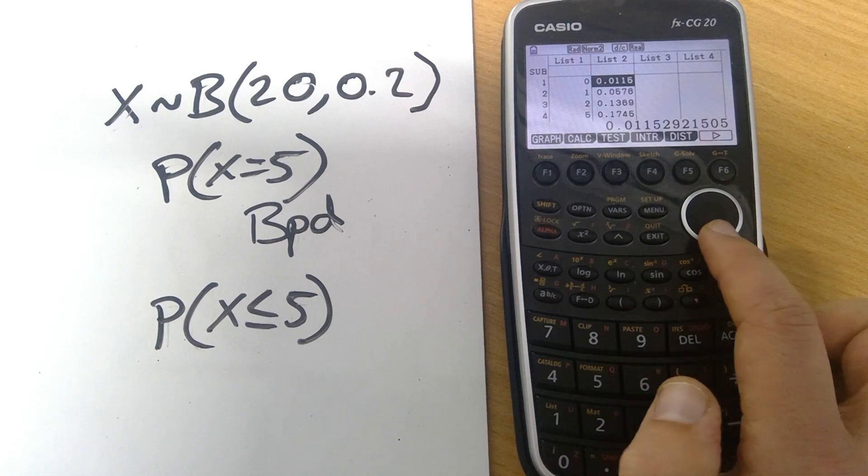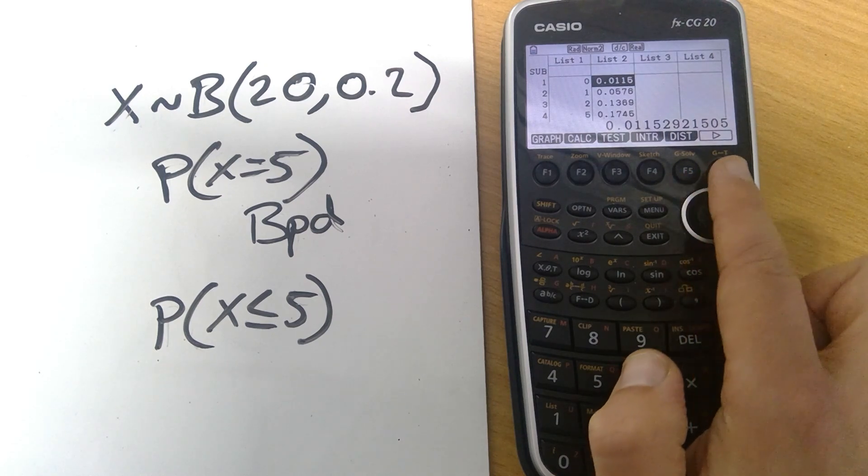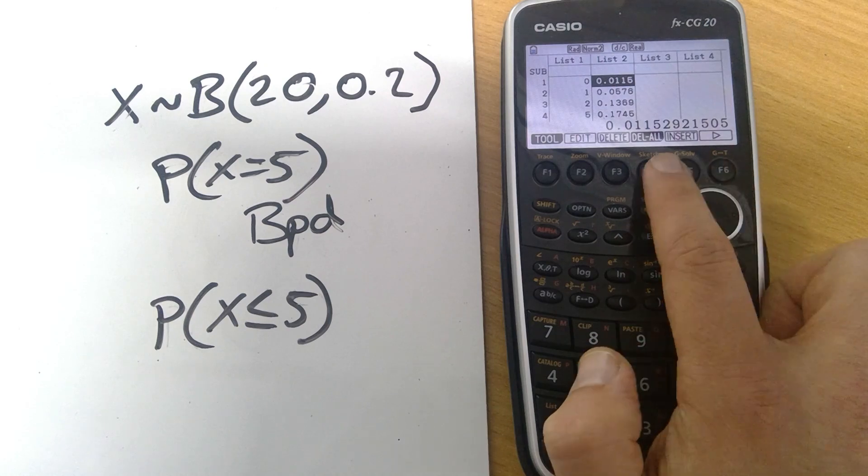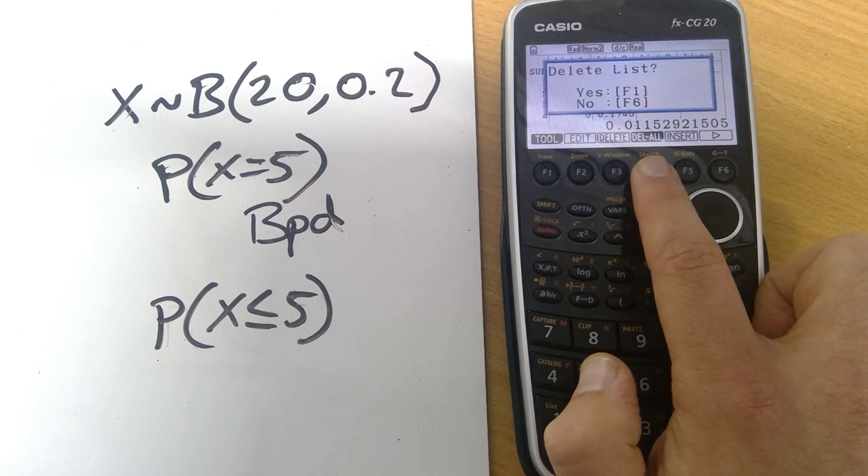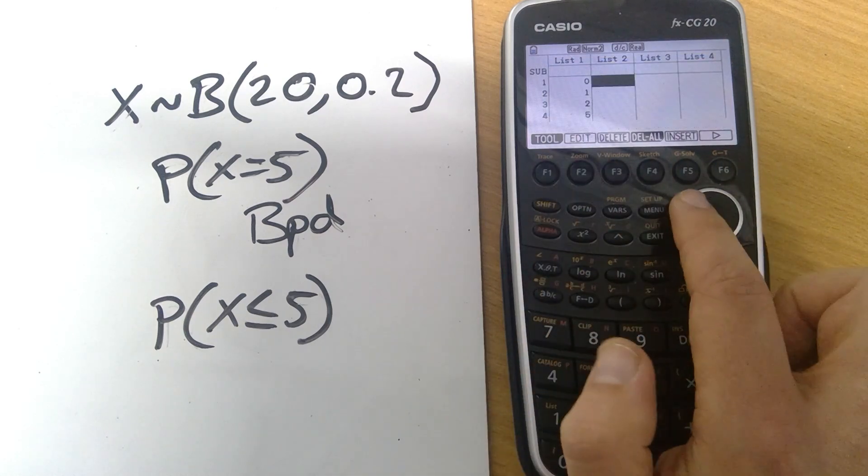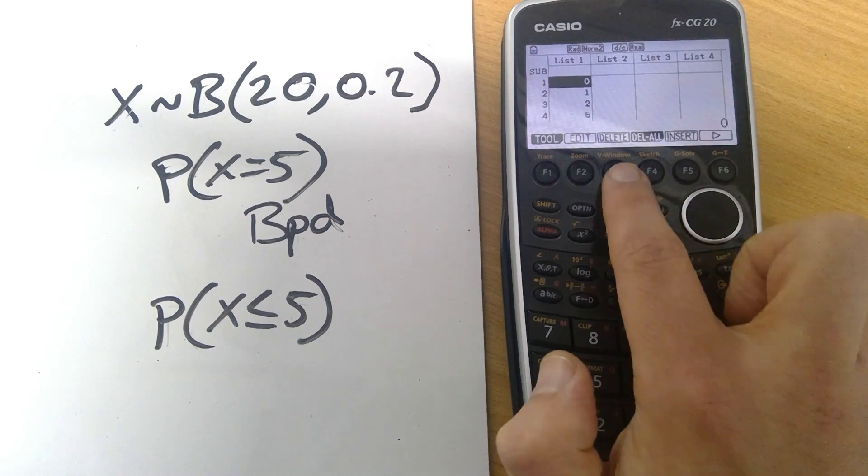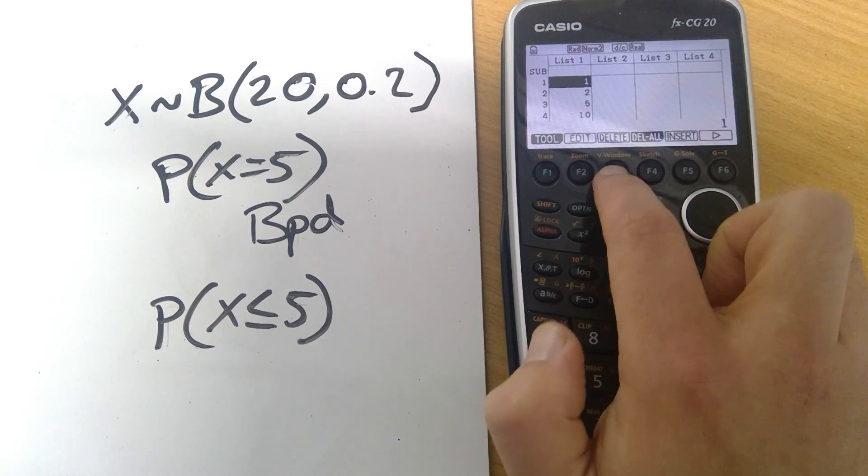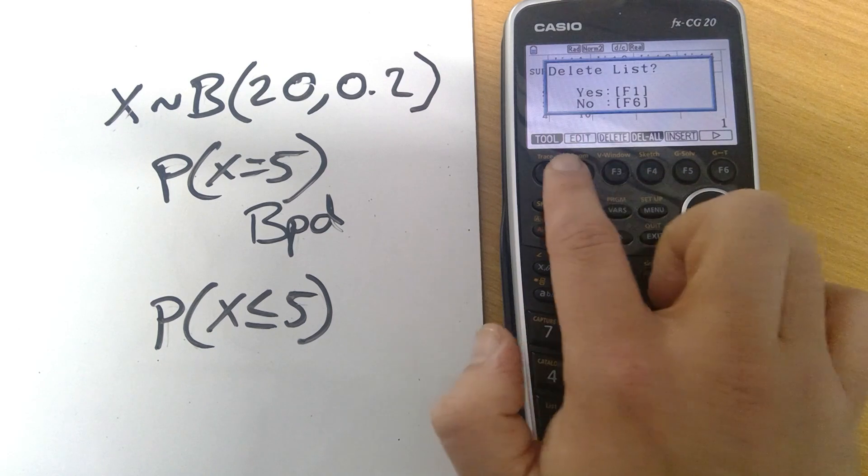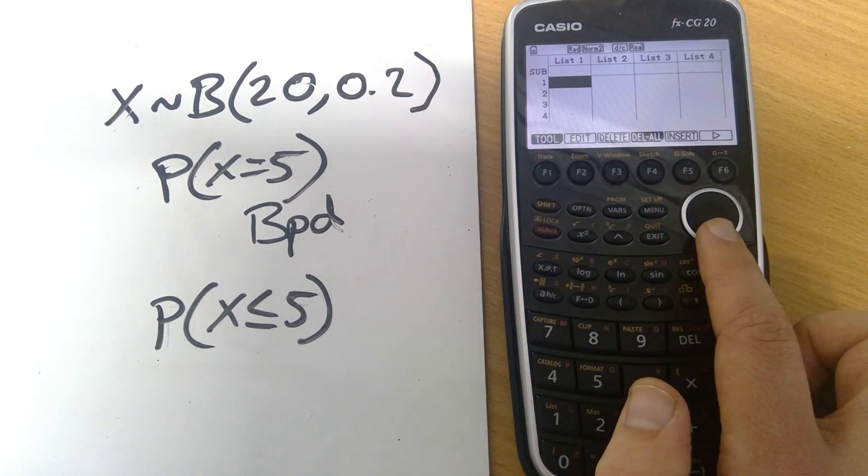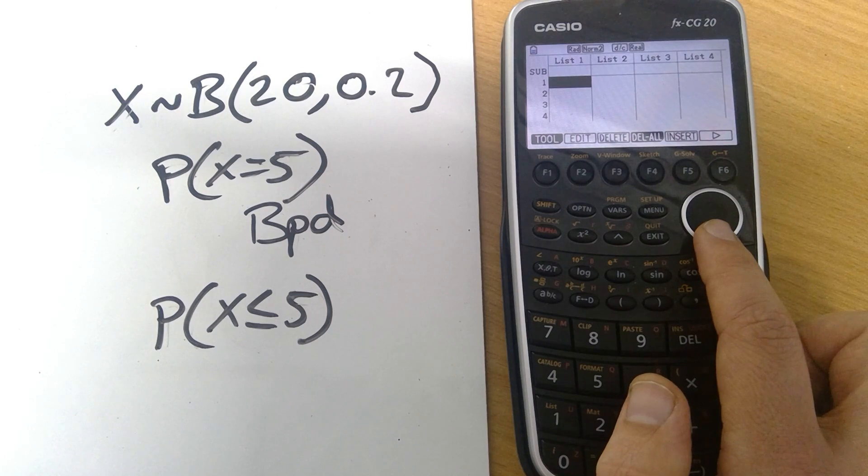We're going to do some more work in a moment. I'm going to want to clear these values out so if I want to do that simply go to the next set of menus pressing delete all will delete that whole column. Or if I wanted to just delete one I could press here, but I want to delete them all so let's just get rid of all of them. So that's how we can do the probability distribution values, one or a whole range of them.